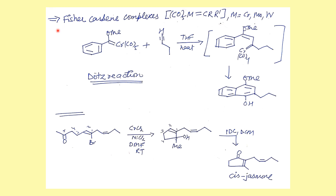Now we are talking about Fischer carbenes. We have now covered organochromium compounds, and we now know about carbene complexes such as those of chromium and tungsten.